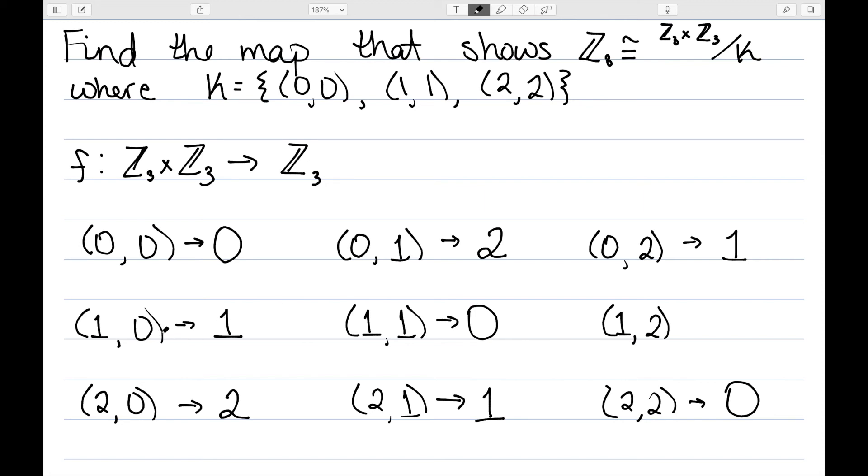Finally, (1,0) plus (0,2) is (1,2), and we have that 1 plus 1 is 2. So this would define the mapping that shows that Z3 is isomorphic to Z3 cross Z3 mod K, where K is given here.